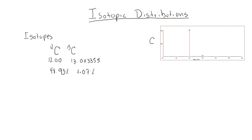If we look at the isotopic distribution of carbon, we can see that the major peak is going to be carbon-12, and then there is a really small peak for carbon-13. In mass spectrometry, your isotopic distribution comes from the abundances of each individual isotope, which is why you have two peaks — one for carbon-12 and one for carbon-13 — instead of only one peak.